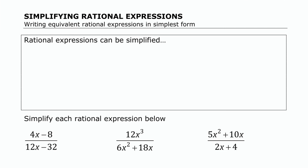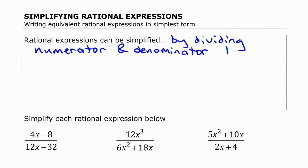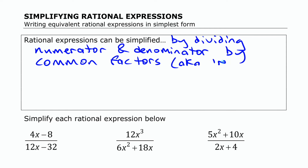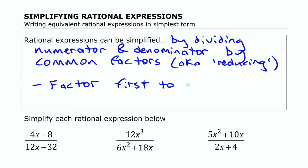Rational expressions can be simplified in much the same way as you can simplify rational numbers or fractions. This can be accomplished by dividing both the numerator and denominator by common factors — what people often call reducing rational expressions. It often helps to factor first to help identify those common factors.